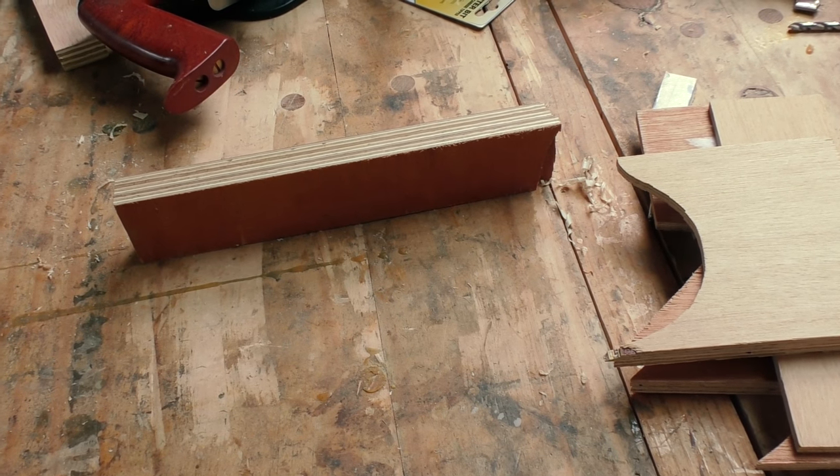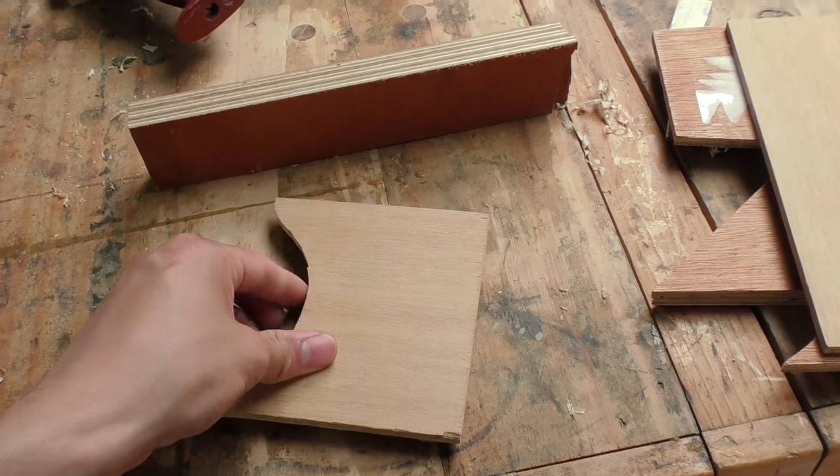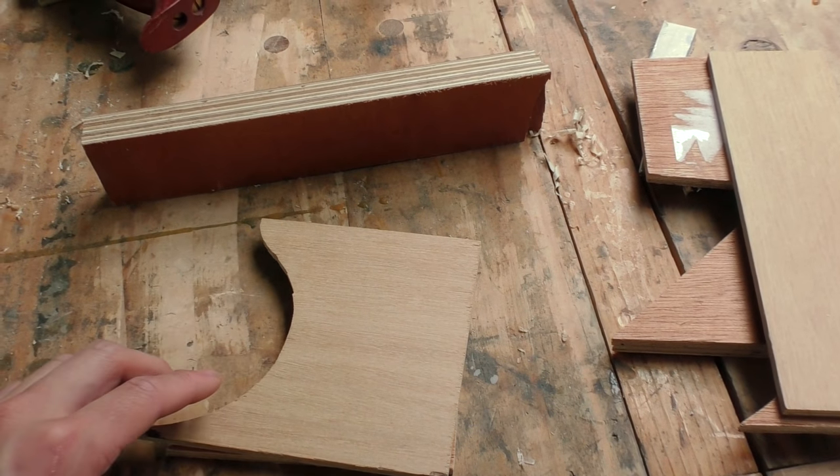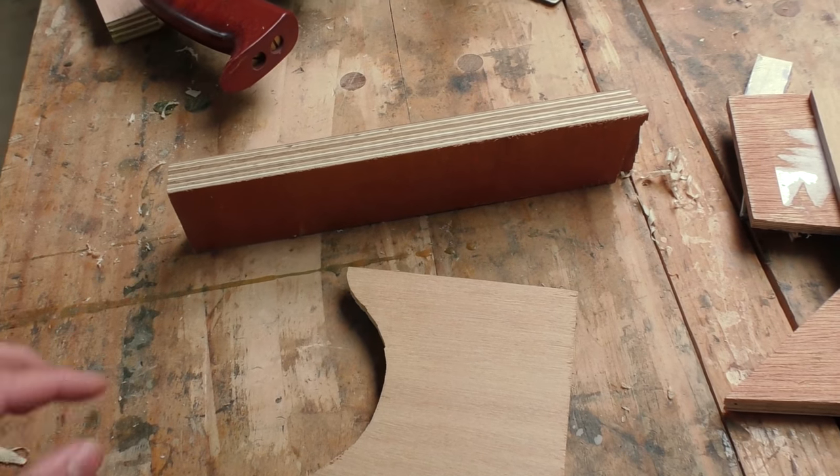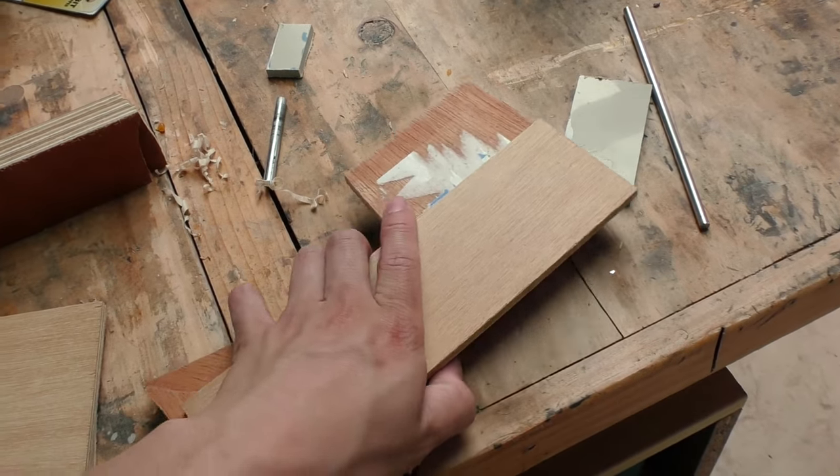For the strap piece, I'm going to use marine ply as well. I could have just glued two pieces of marine ply together and then cut out the strap shape from this side, but I actually want the grain to be running in the same direction as the case piece. So I'm going to stack multiple layers of marine ply.